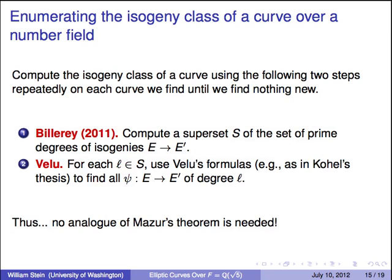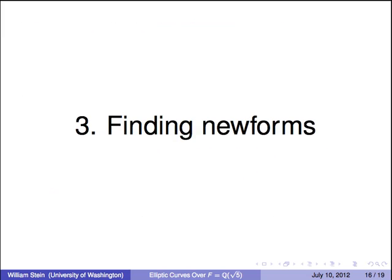One other quick comment. So if you have one elliptic curve, you finally found the elliptic curve attached to a modular form, you need to find all the other ones. There's a recent paper of Billerey in which he gives an algorithm to compute a finite set of primes. That set of primes is a superset of the primes for which you can have an isogeny. So you just use Billerey's formulas, his algorithm, and it's actually much simpler in the case of a quadratic field.